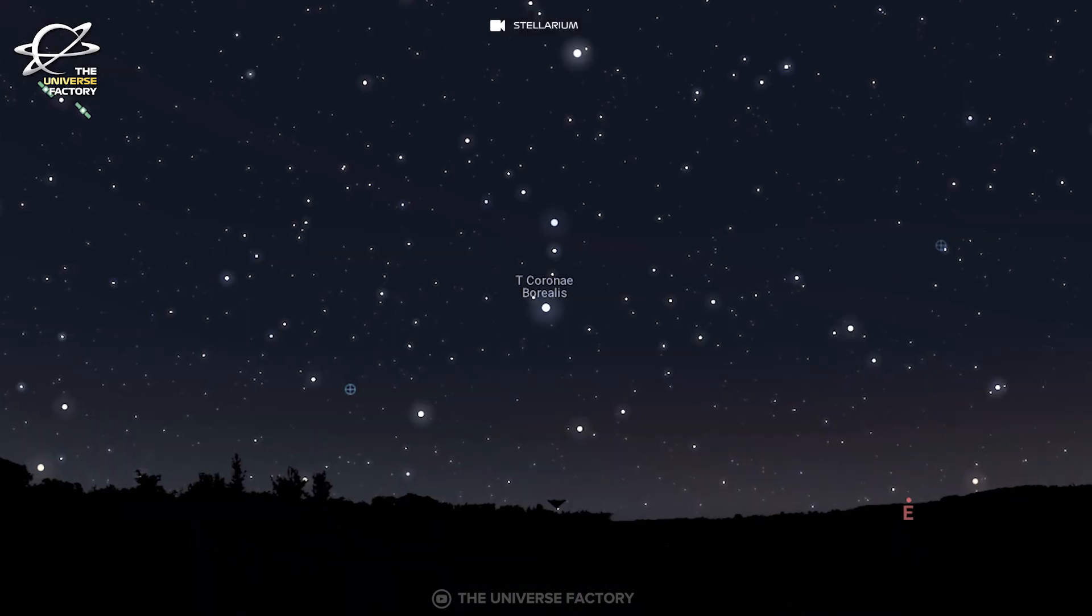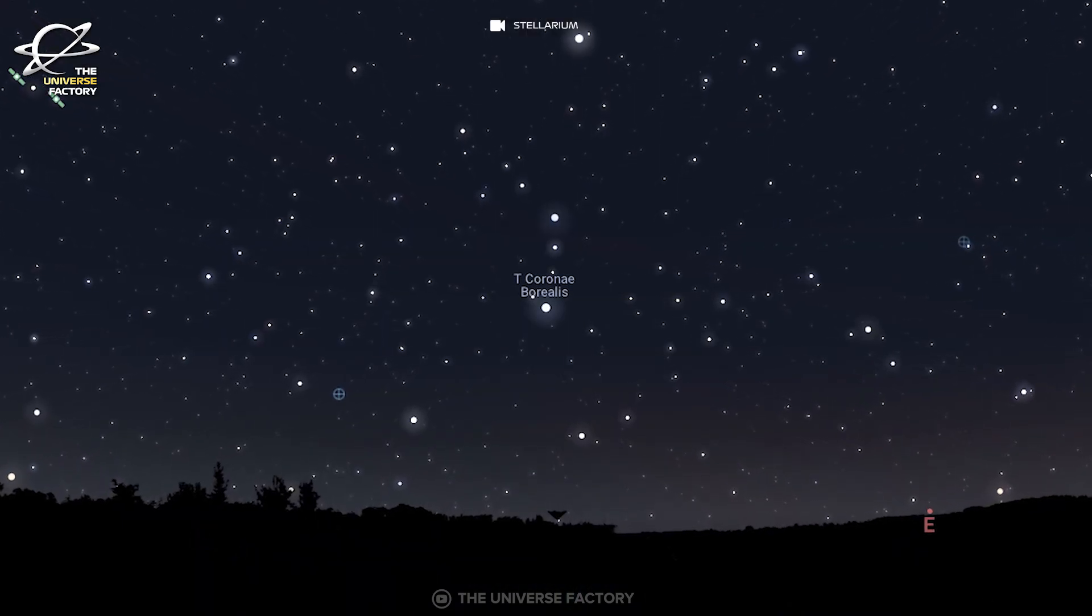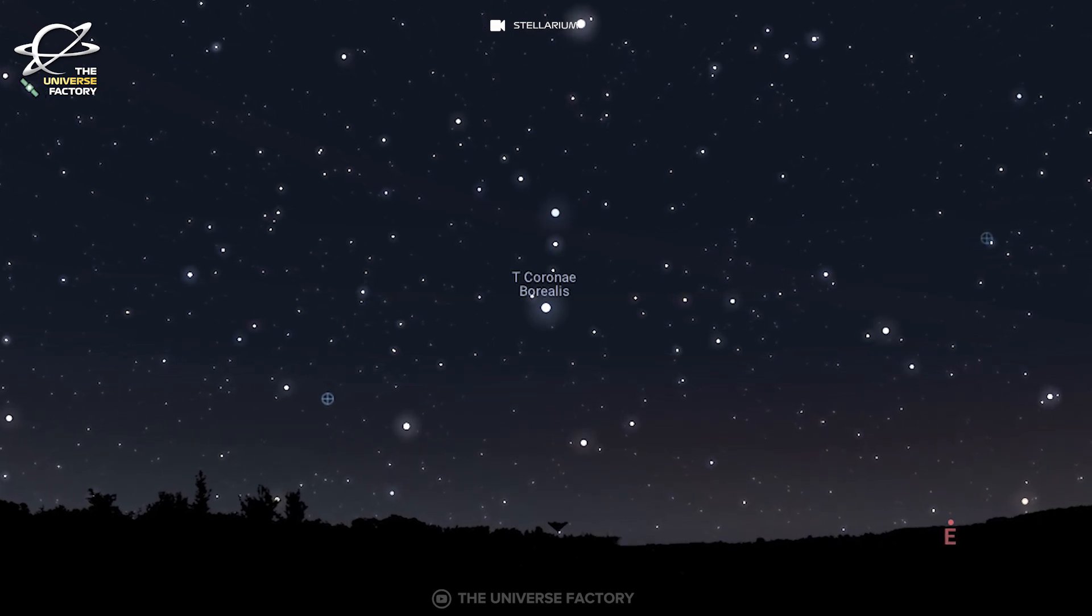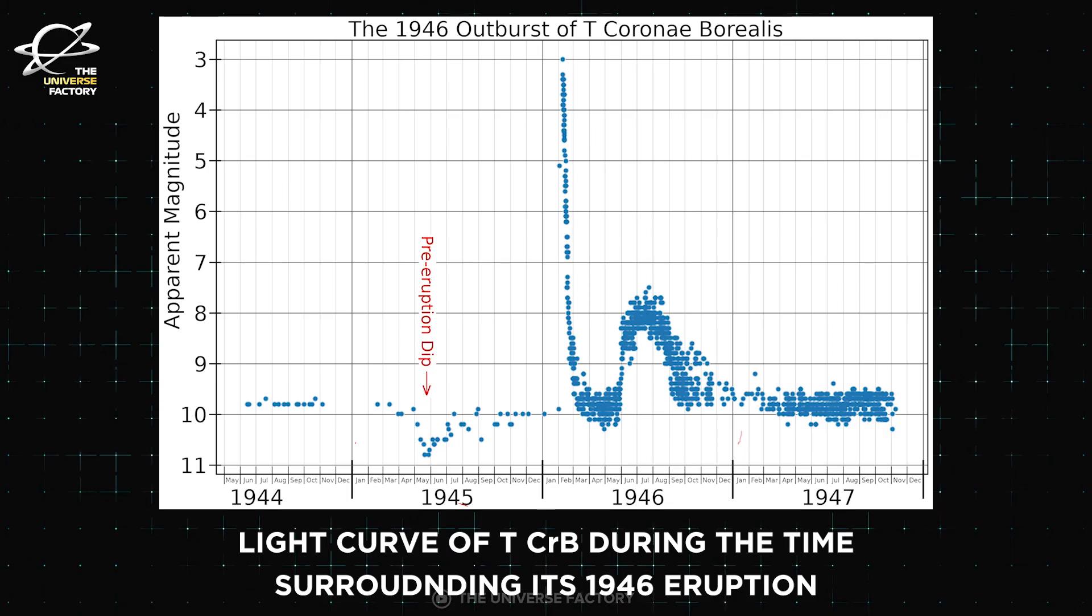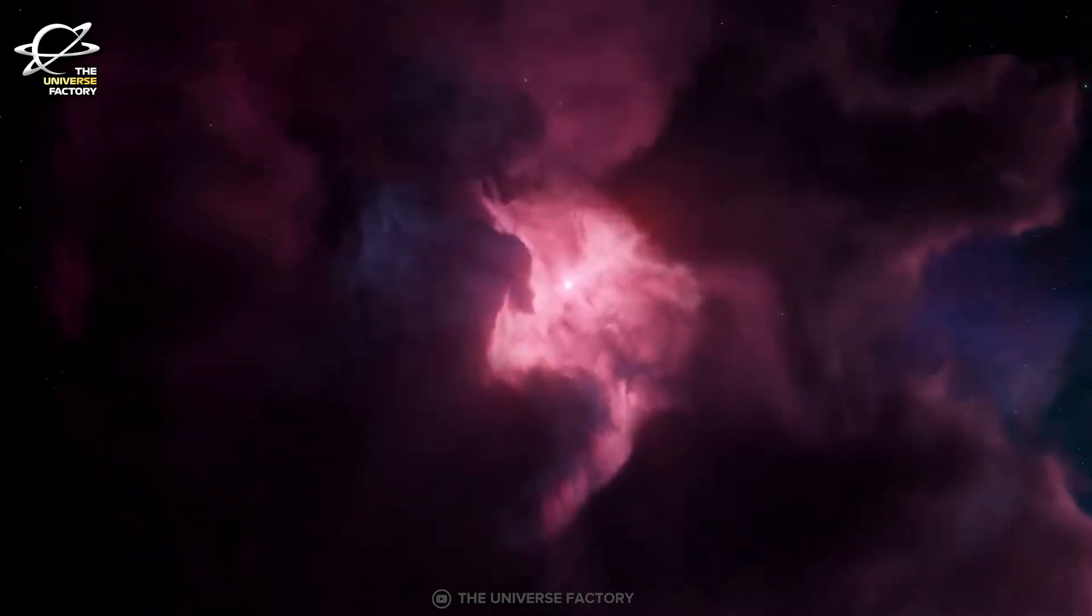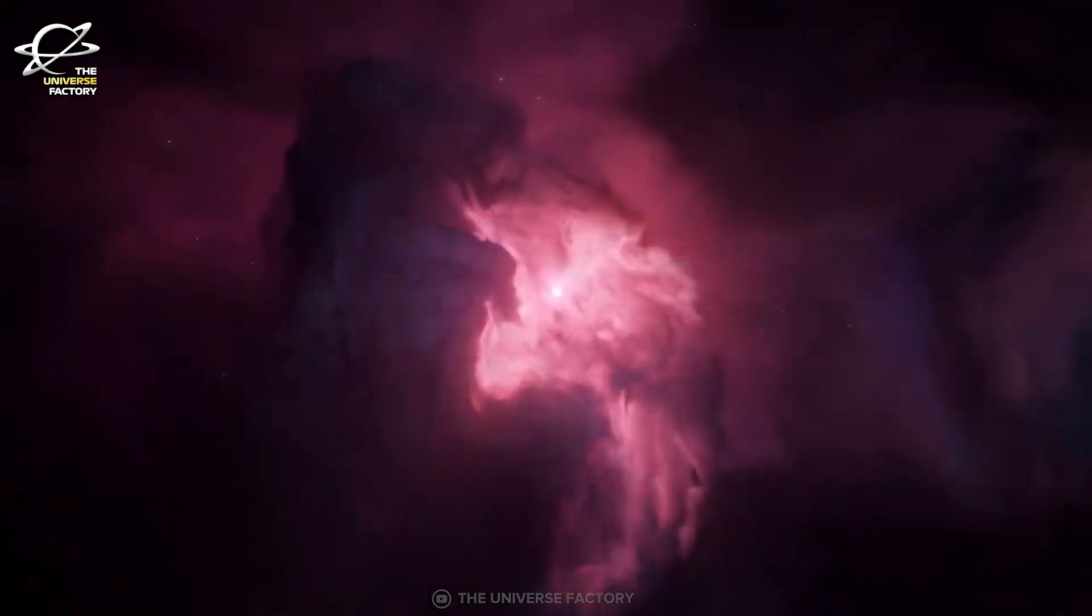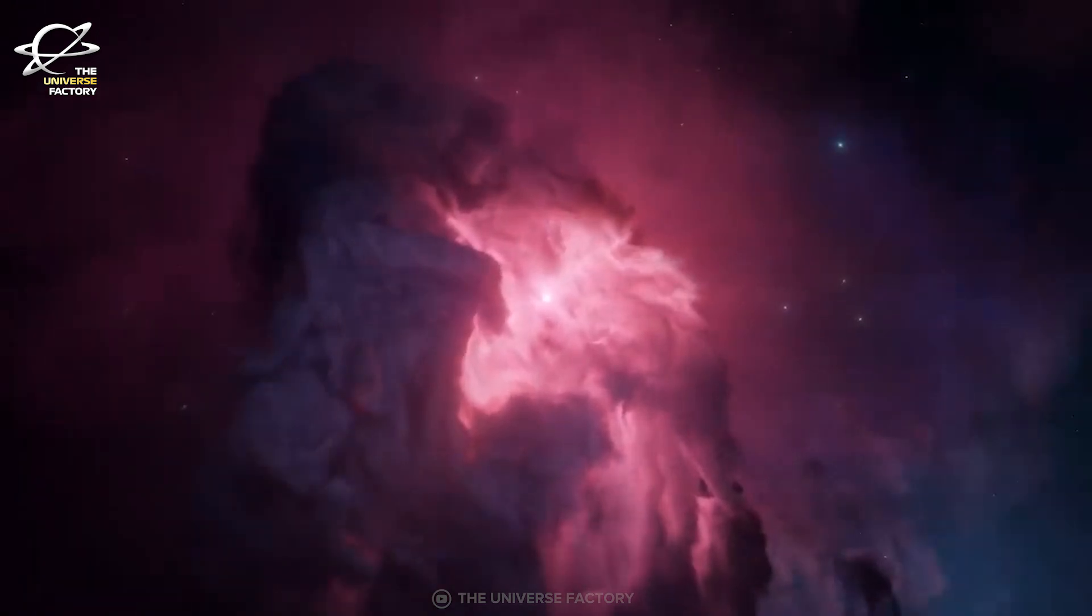T Corona Borealis was first discovered in 1866 in outburst. It last exploded in 1946, and astronomers believe it will do so again between February and September 2024. This could be a once-in-a-lifetime viewing opportunity, as the nova outburst only occurs about every 80 years.